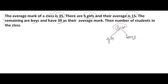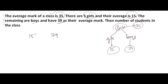By mixing the two groups we get the class average. The girls' average is 15 and the boys' average is 39; by mixing them the average is 35. Since individual averages and total average are all given, we can directly use the allegation technique. We take the difference diagonally: 35 minus 15 is 20, and 39 minus 35 is 4.